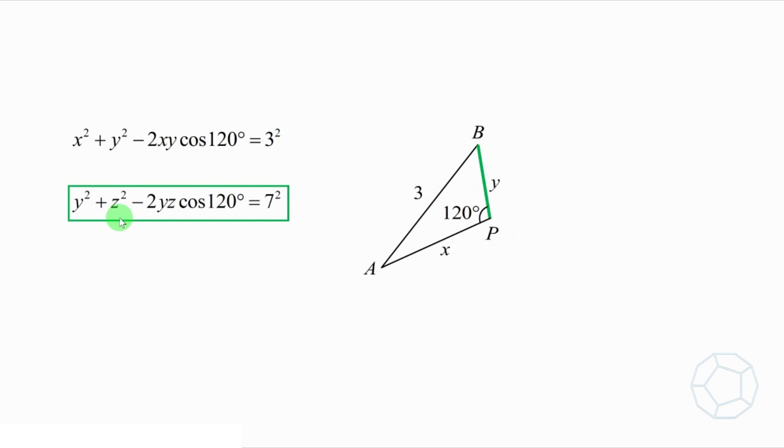Next, for the equation y square plus z square minus 2yz cosine 120 degrees equal to 7 square, we can make use of the side Pb with length y. Then rotate 120 degrees to draw a side Pc with length z. So the length of bc is 7.